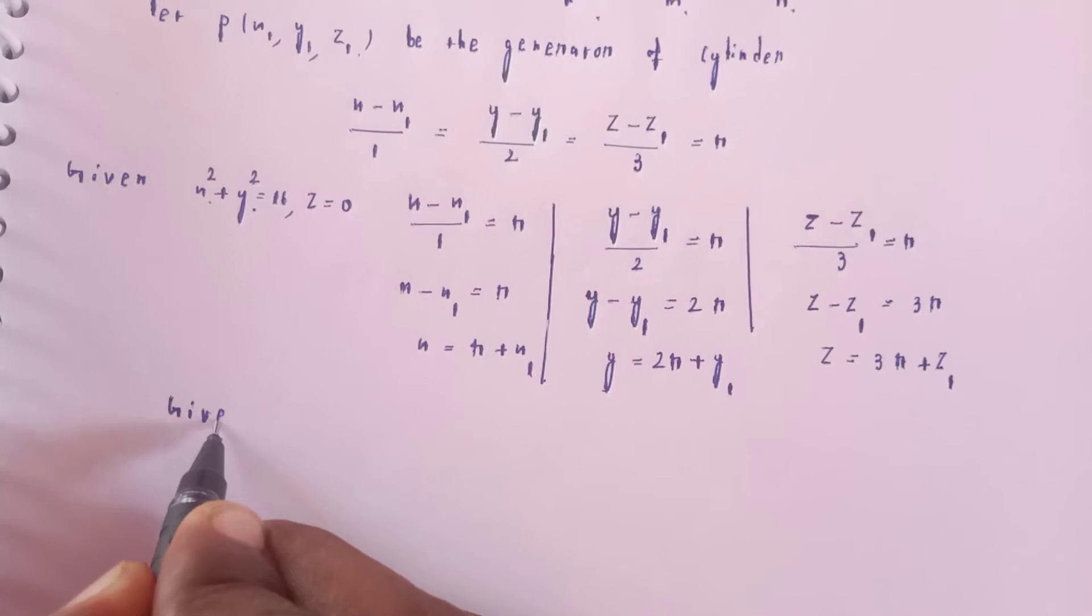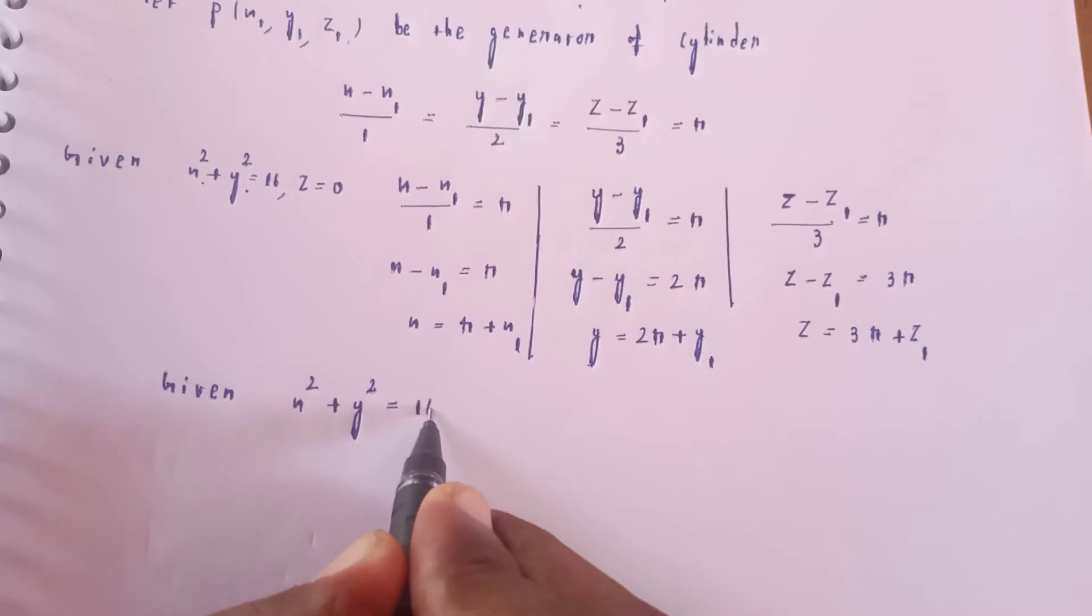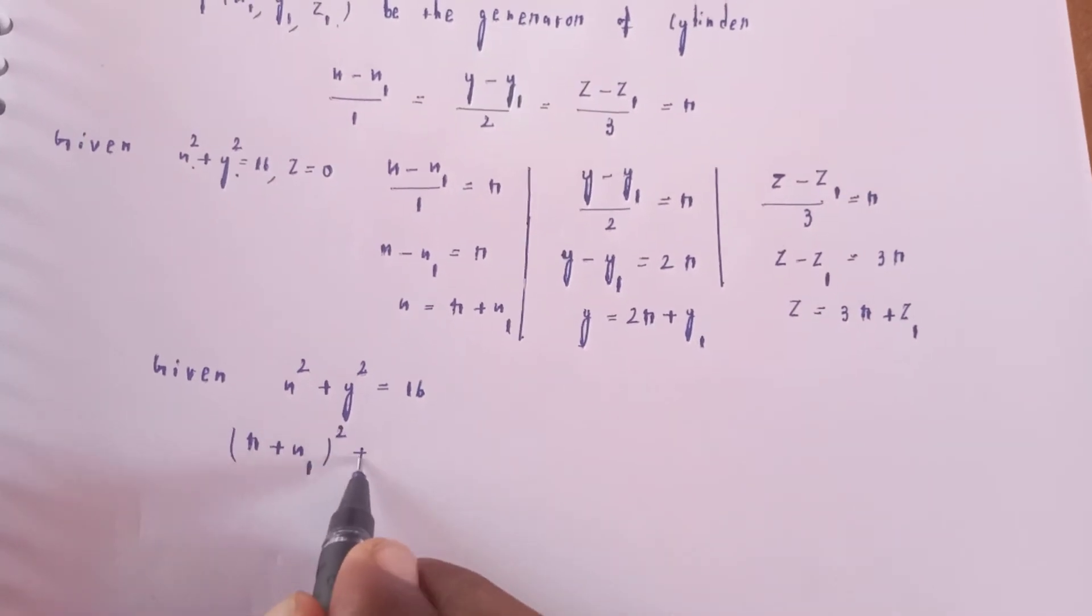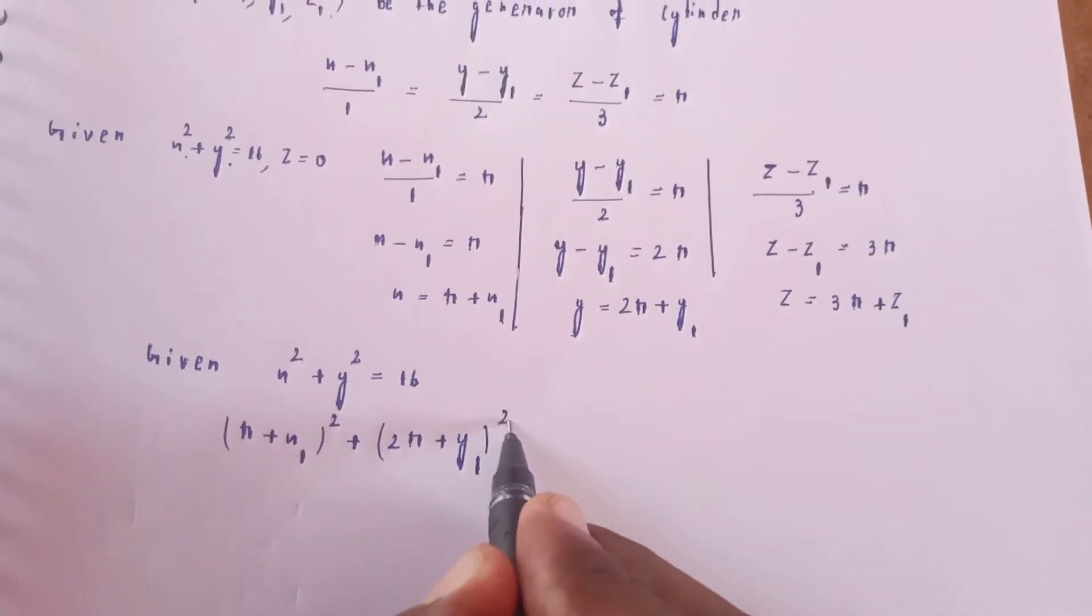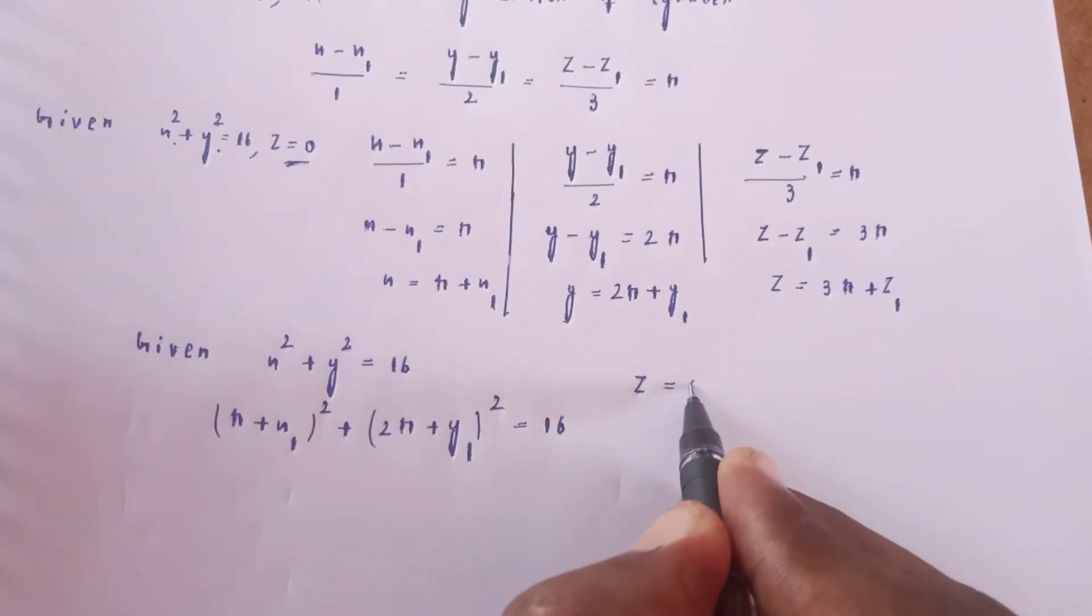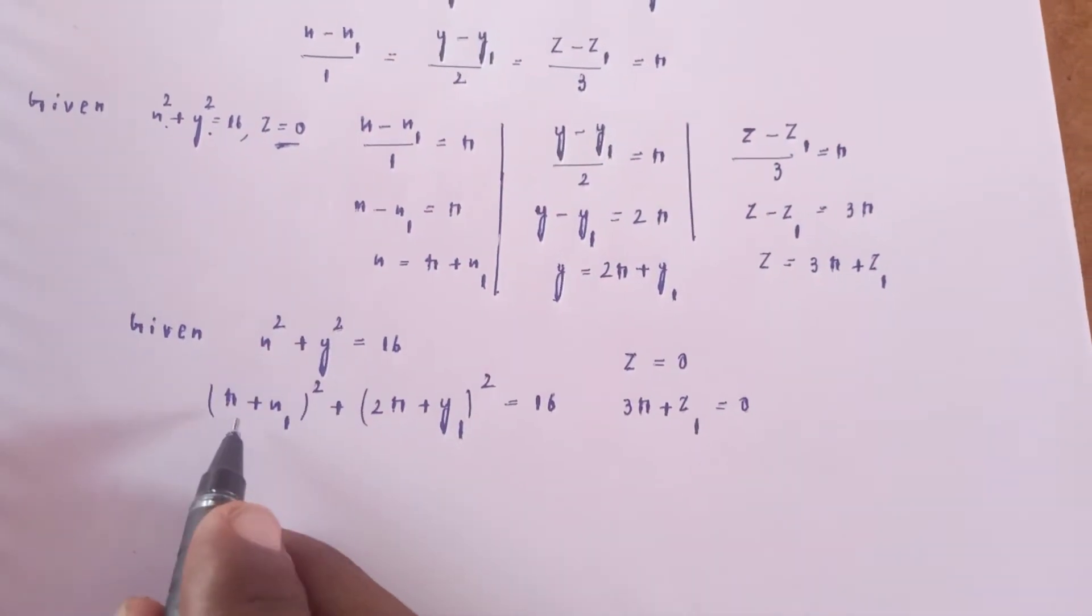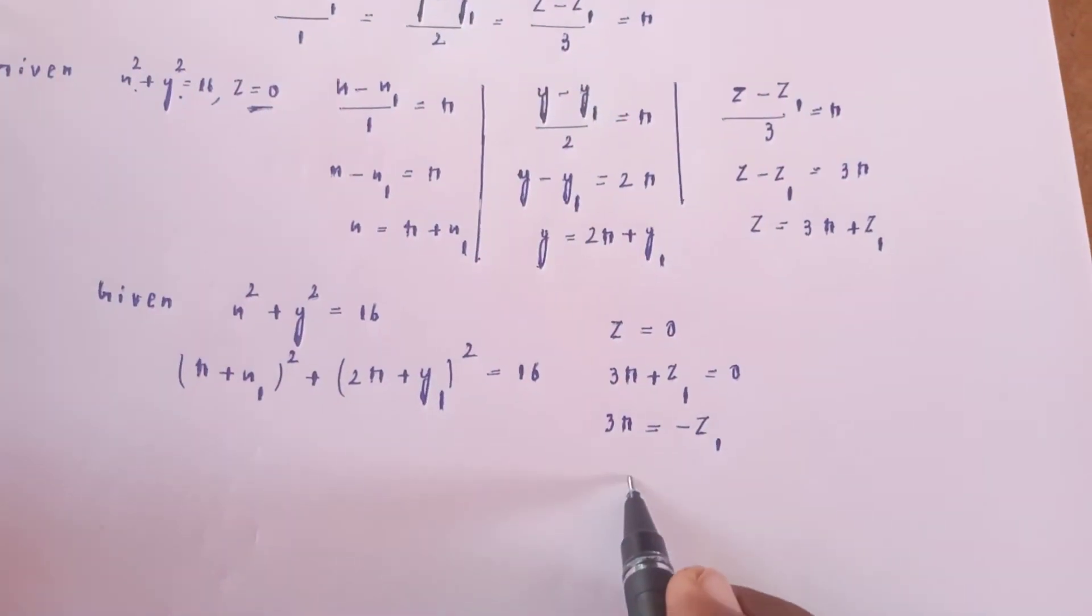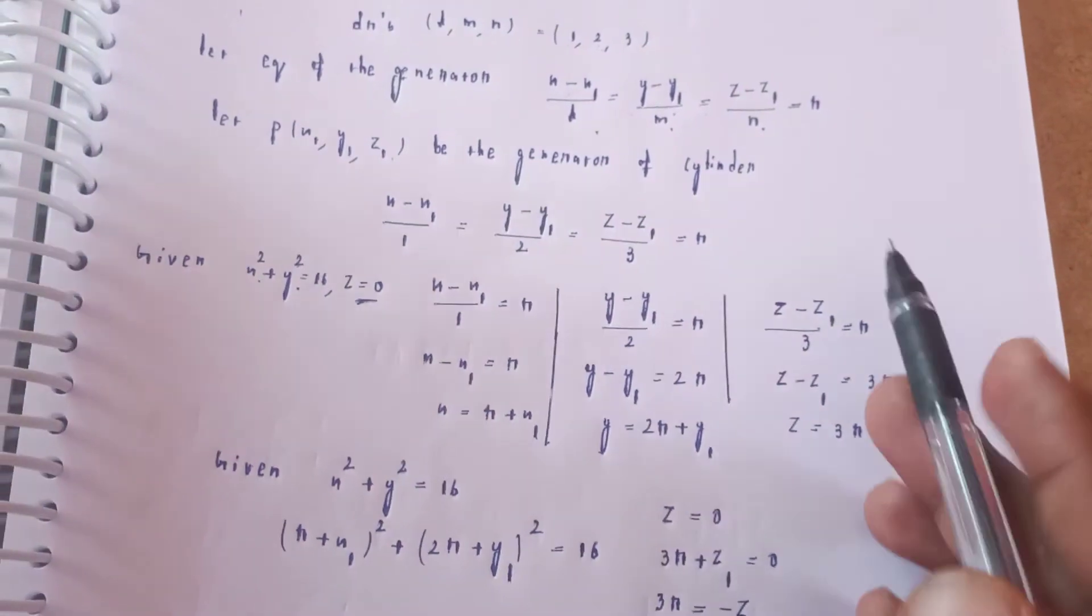Substitute into x² + y² = 16. (r + x₁)² + (2r + y₁)² = 16. From z = 0, we have 3r + z₁ = 0, so r = -z₁/3.